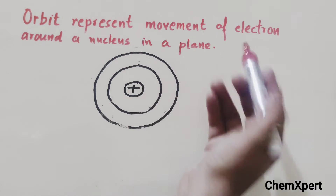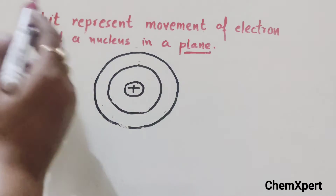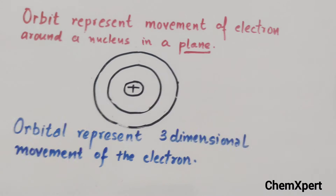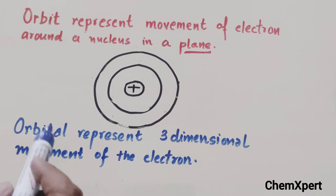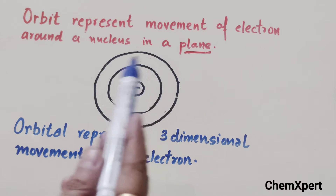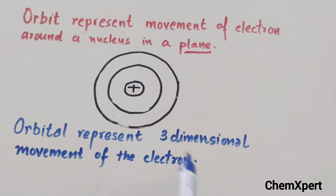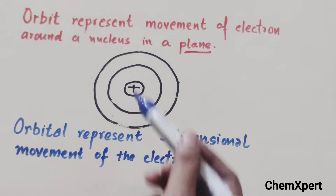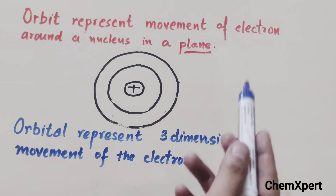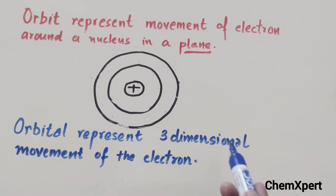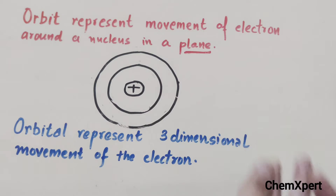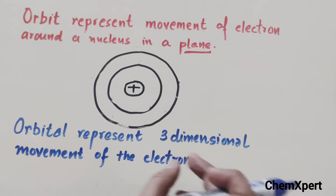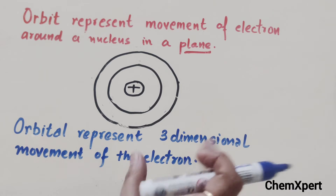Orbit represents the movement of the electron around the nucleus in a plane — it is a very important fact that orbit represents a plane. Whereas orbital represents the three-dimensional movement of electrons — along the x-axis, y-axis, and z-axis also. So in the case of orbital, the movement of the electron is three-dimensional.